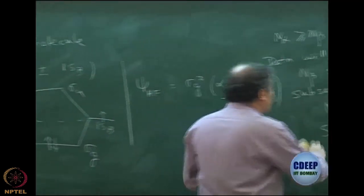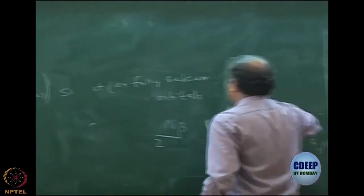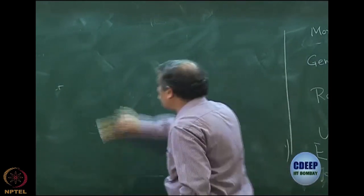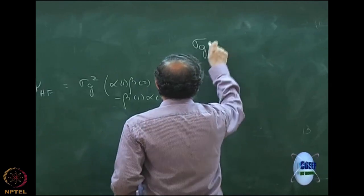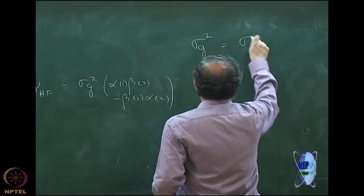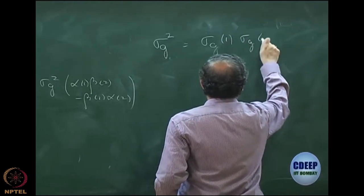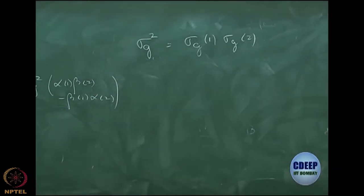I am not going to worry about this part, but I am going to come back and worry about this part. Let us look at sigma_g square. It is a very simple Hartree-Fock, the simplest Hartree-Fock that you can do. I analyze the sigma_g square. What is sigma_g square? It is sigma_g(1) into sigma_g(2).